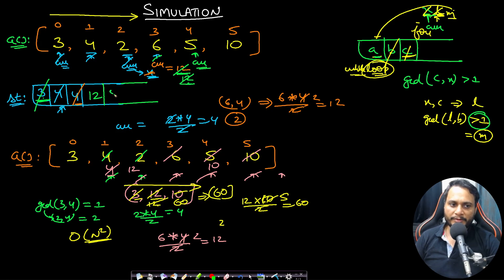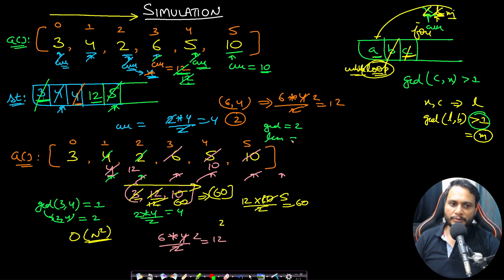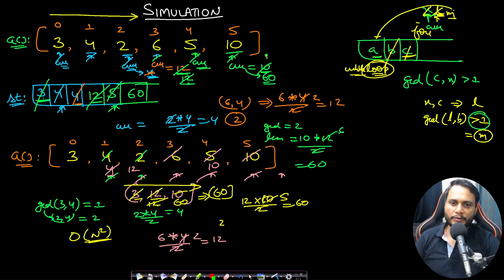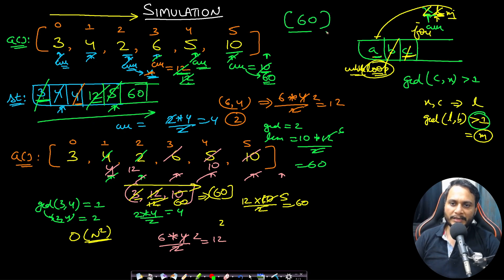Continuing: check 10 vs 5: GCD=5 > 1, LCM = 5×10/5 = 10, pop 5, current=10. Check 10 vs 12: GCD=2 > 1, LCM = 10×12/2 = 60, pop 12, current=60. Stack is empty, push 60. No more elements. The stack now contains only [60], which is the final result. This is correct because the simulation fully handles all reductions in a single pass.